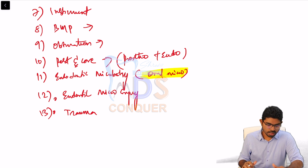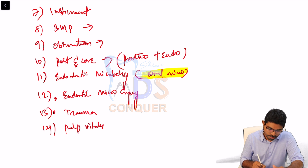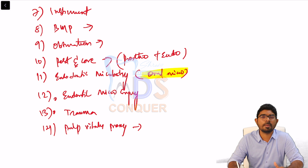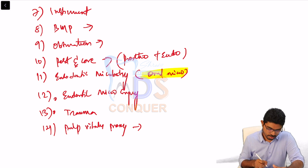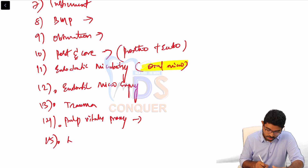Pulpal vitality procedures include direct pulp capping, indirect pulp capping, pulpotomies, and pulpectomies — all of which you are familiar with.